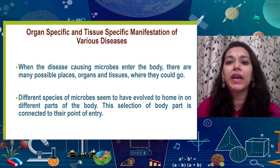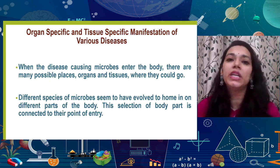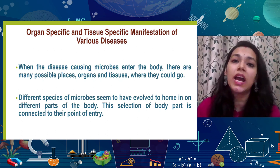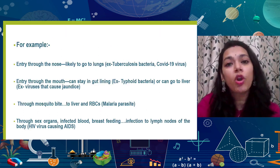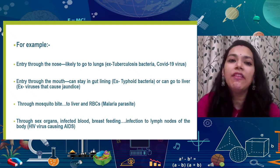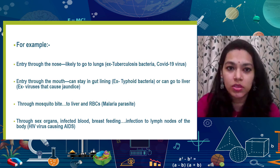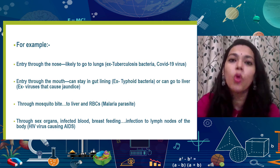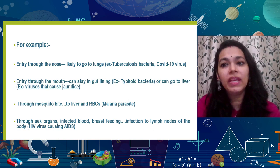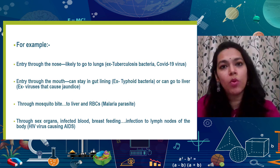The route these microorganisms take to enter the body is related to the signs and symptoms people get. Over a long period of time, certain microorganisms have been found to preferentially develop in certain organs of our body, giving us an indication of what kind of disease we may have. For example, if a microorganism — say a virus — enters through the nose, the likely symptoms will be from the lungs, as with common cold and COVID-19. In the COVID-19 pandemic, it has been widely shared that we must cover our nose and mouth to prevent entry of the virus.